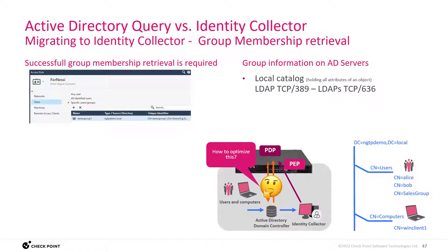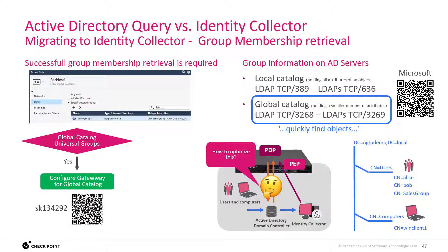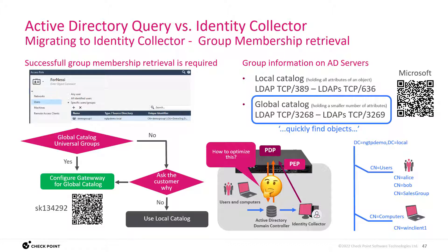Regarding local versus global catalog: the global catalog only includes references to some of the attributes, so it's quicker to find objects. This is something Microsoft recommends. Please refer to the Microsoft documentation indicated here to learn more, and then configure the Check Point Security Gateway PDP instance to use the global catalog. If you cannot use it, have a dialog — why? What is really preventing the customer from making use of this? Otherwise, use the local catalog.